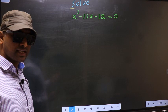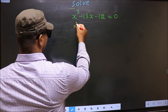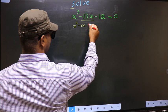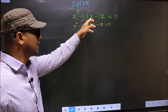For that we need to change the x term. In place of minus 13x, I write minus 1x minus 12x minus 12 equal to 0. In place of minus 13x I have written minus 1x minus 12x.